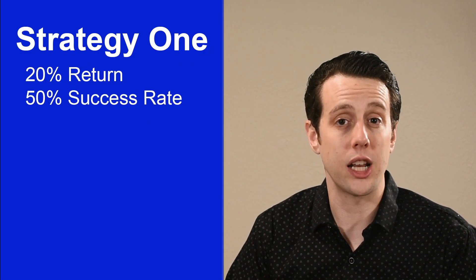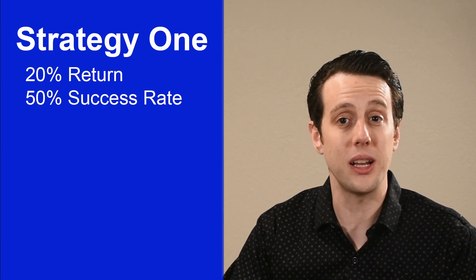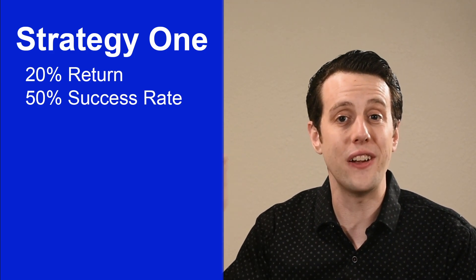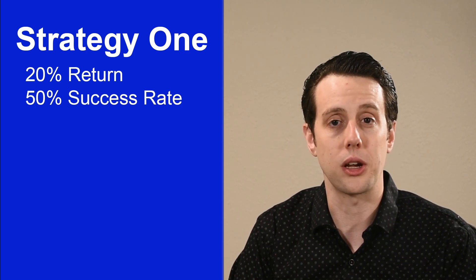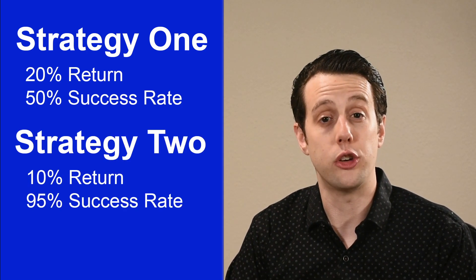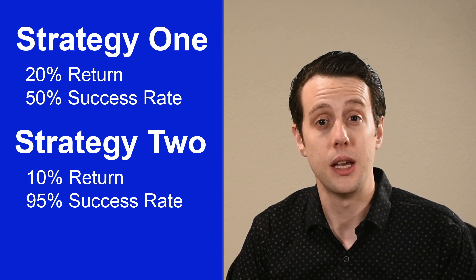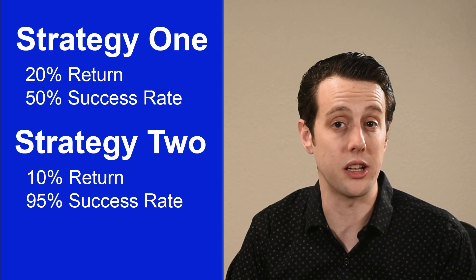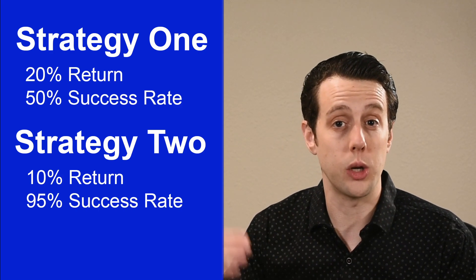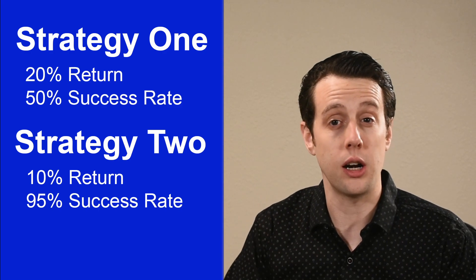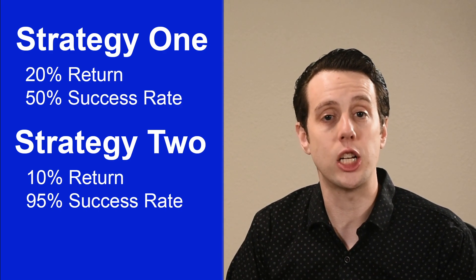Let's say you have two possible investment strategies. Strategy one will give you a 20% return, but it only has a 50% chance of meeting your investment goals. Strategy two gives you a 10% return but has a 95% chance of meeting your goals. Strategy one will allow you to reach your goal faster, but you have a high chance of failure. Asset allocation is about estimating this risk-return trade-off to craft a portfolio that best fits your risk appetite and goals.